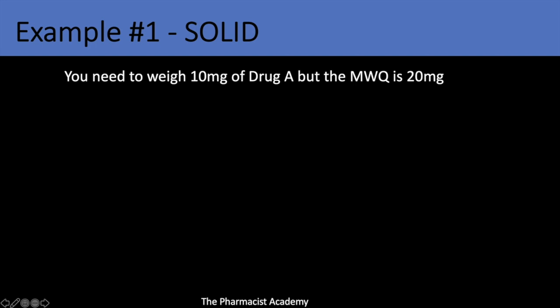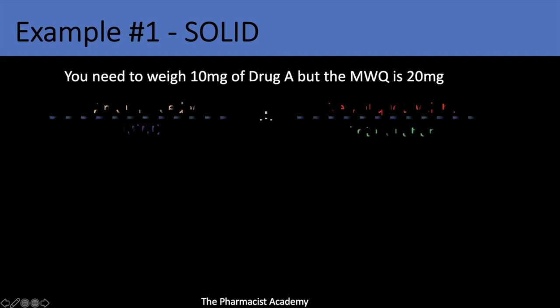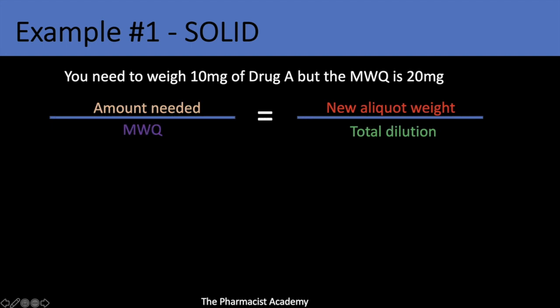You need to weigh 10 milligrams of drug A, but the minimum weighable quantity is 20 milligrams. All you need to do is follow this formula. On the left side you have the amount needed over the minimum weighable quantity — in this case, 10 milligrams over 20.